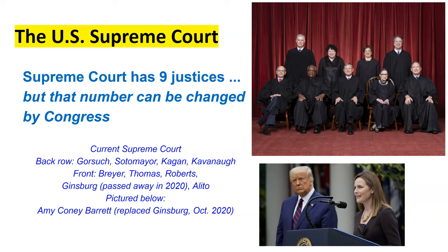The longest serving justices other than the Chief Justice are seated, and those who have served the longest will sit closest to the Chief Justice, branching out based on tenure. When they're seated in the Supreme Court's chambers, the Chief Justice is in the middle and those that have served the longest are seated closest to him, with the newest members on the very ends of the nine that sit on the bench.